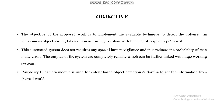The objective of the system is that the automated system does not require any special human intervention and thus reduces the probability of man-made errors. Our Raspberry Pi camera module is used for color-based object detection and sorting to get information from the real world.